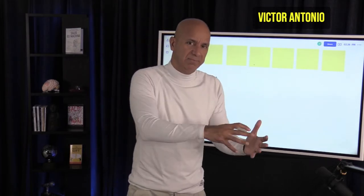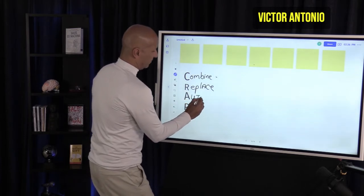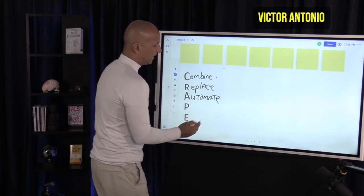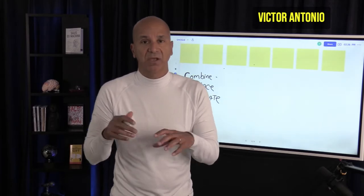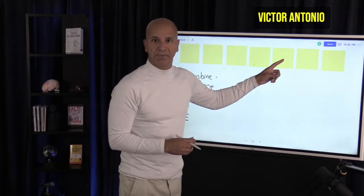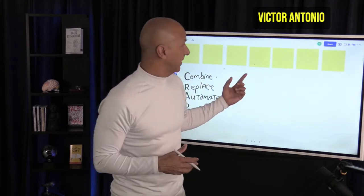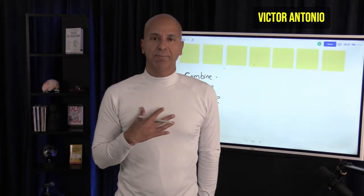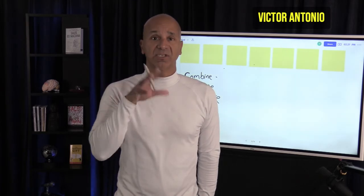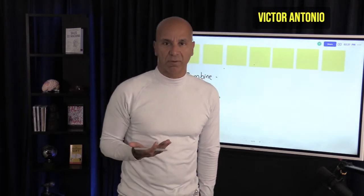The next element is Automate. What can you automate to make things faster? Maybe you have a product that allows somebody to automate three steps — think about it, you can combine them through automation. Haven't you ever bought a software package or app that lets you automate two or three steps so you don't have to repeat every single step every time? Ask yourself: how can my product or service automate some of my customer's processes?